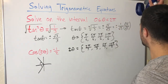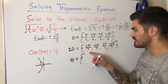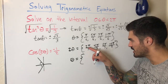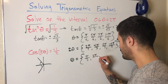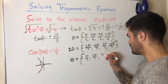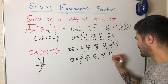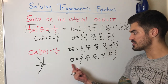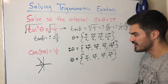Now I divide everything by two to solve for theta. Two pi over three divided by two gives pi over three; four pi over three gives two pi over three; eight pi over three gives four pi over three; ten pi over three gives five pi over three. So theta equals pi over three, two pi over three, four pi over three, and five pi over three — four solutions instead of the usual two, because the interval expanded.